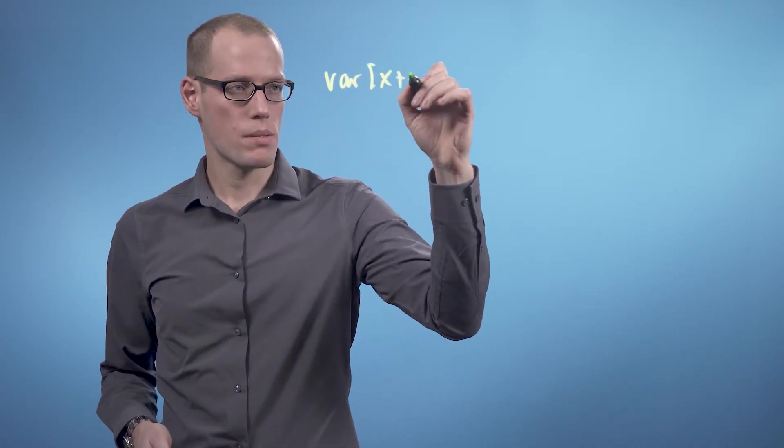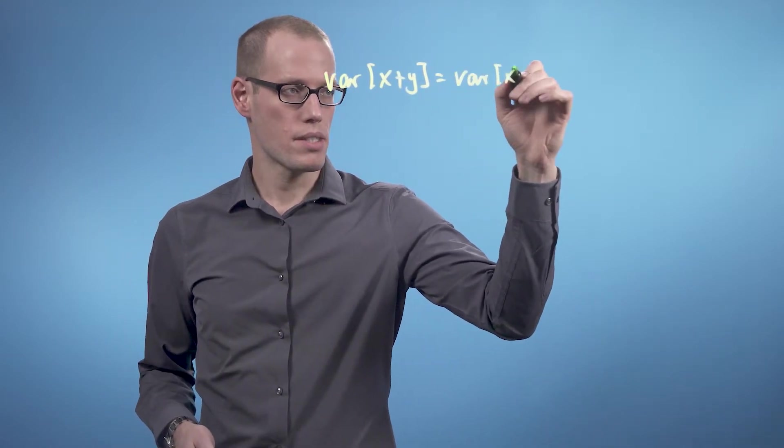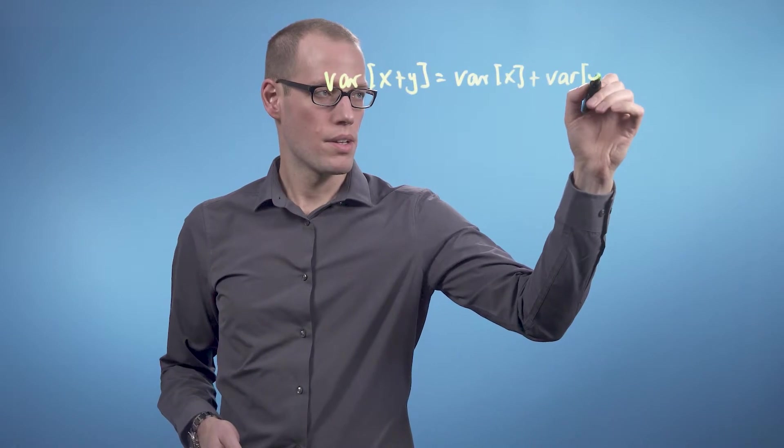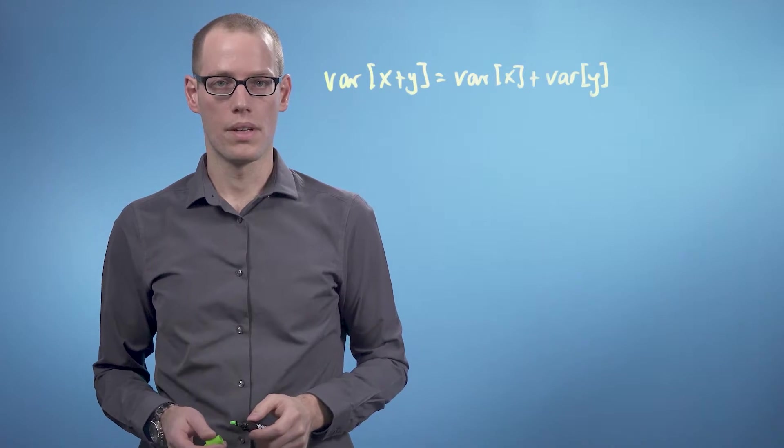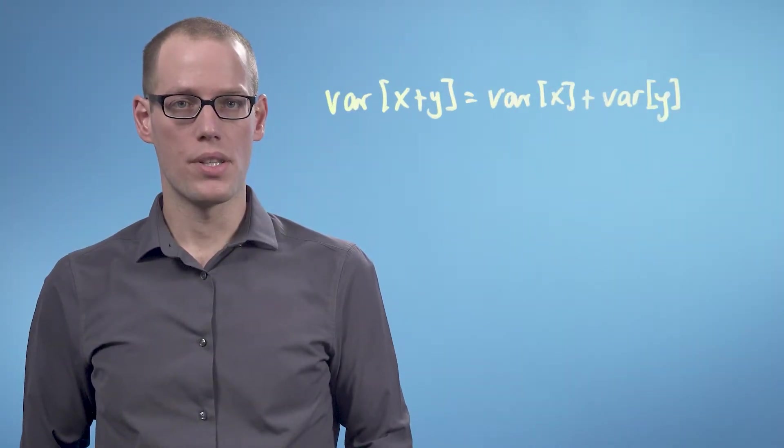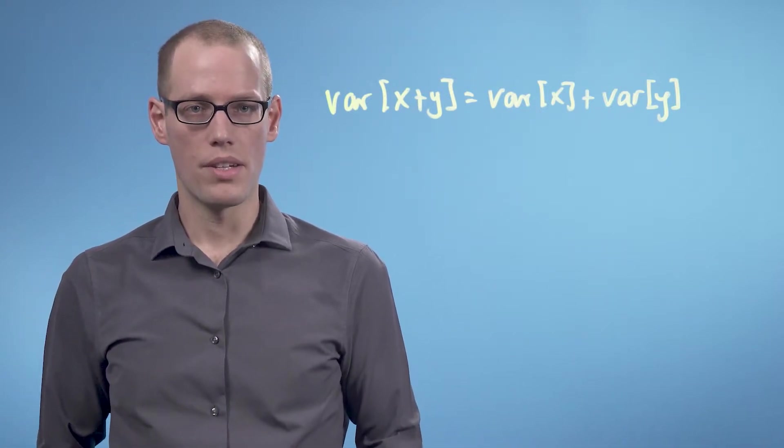Another example for defining an inner product between unusual types are random variables or random vectors. If we have two random variables which are uncorrelated, then we know the variance of x+y is the variance of x plus the variance of y. If you remember that variances are measured in squared units, this looks very much like the Pythagorean theorem for right triangles.